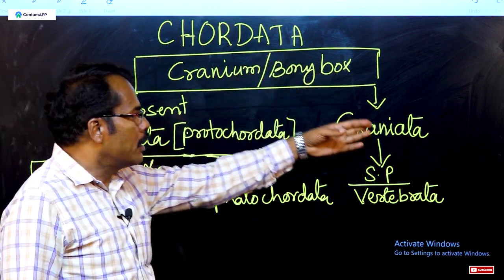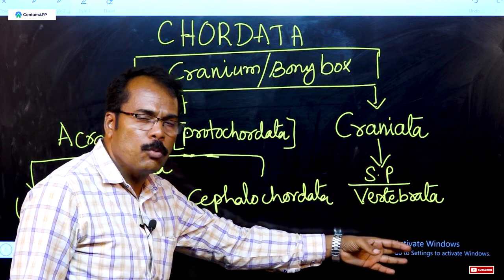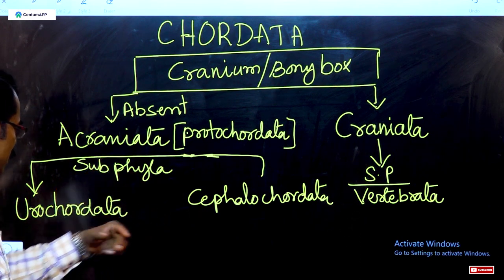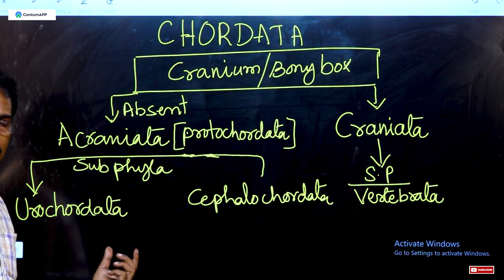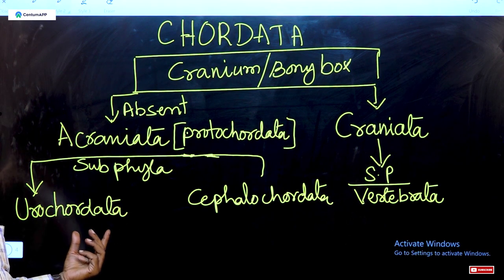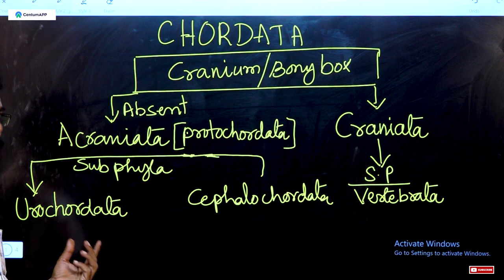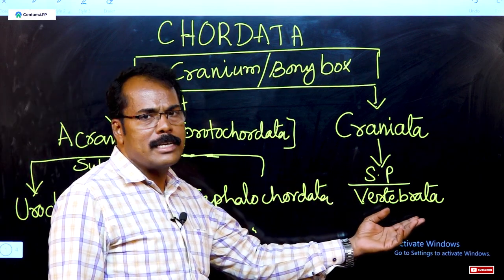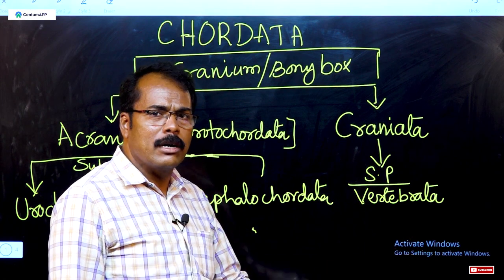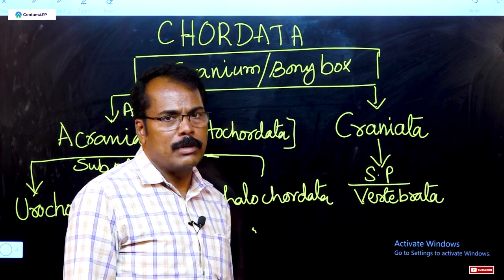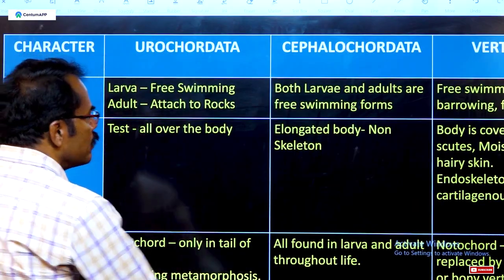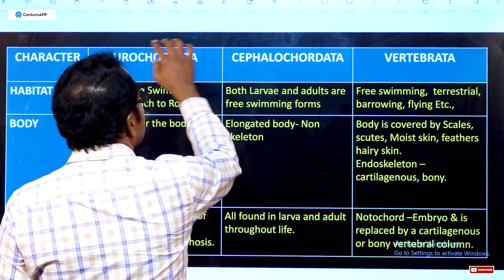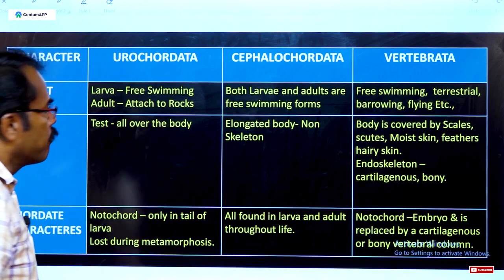In the Acraniata, the cranium is completely absent. These are further classified into two subphyla: if the notochord is present only in the tail region, they are called Urochordata; if the notochord extends up to the head region, they are called Cephalochordata. In Vertebrata, the notochord is modified or replaced with the vertebral column.